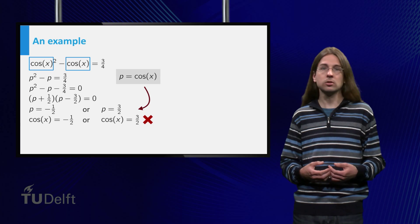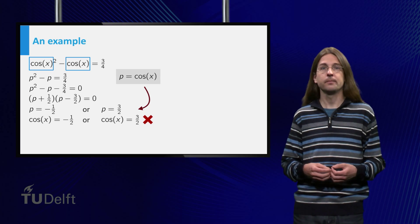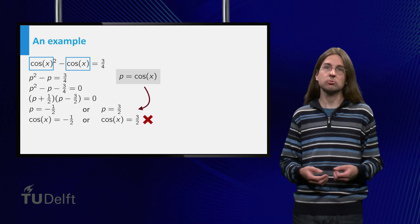The second equation has no solutions, as the cosine is always between -1 and 1. For the first equation, we need to solve cos(x) = -1/2.